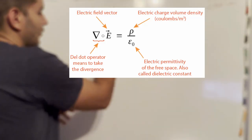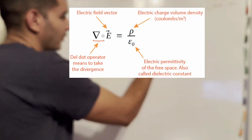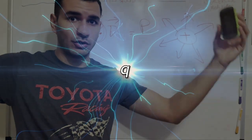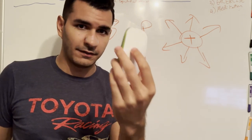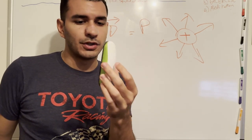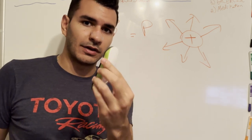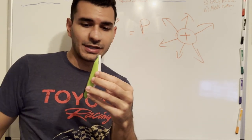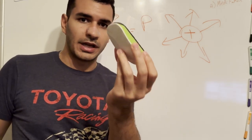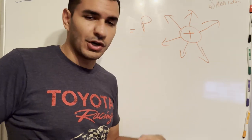The first equation tells you that the electric field will diverge based on some electric charge with respect to the permittivity of space. That charge can exert an electric field in essentially all directions, and this is very similar to gravitational fields. For example, if I have this eraser, it has mass, and that mass is going to exert a gravitational field — the pulling force will be in the same direction as the field.